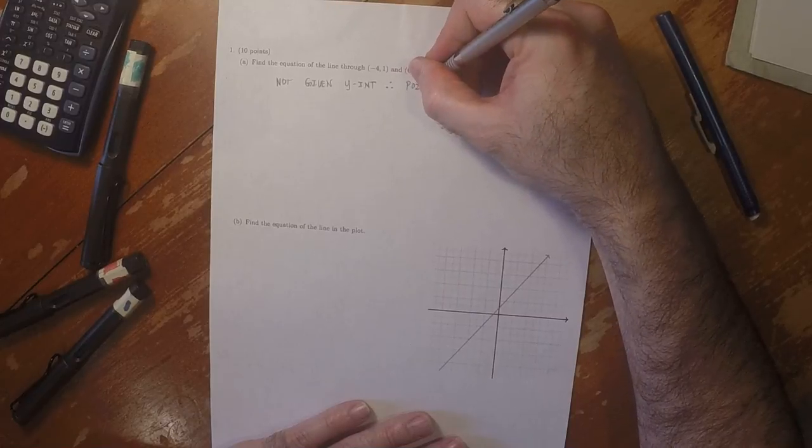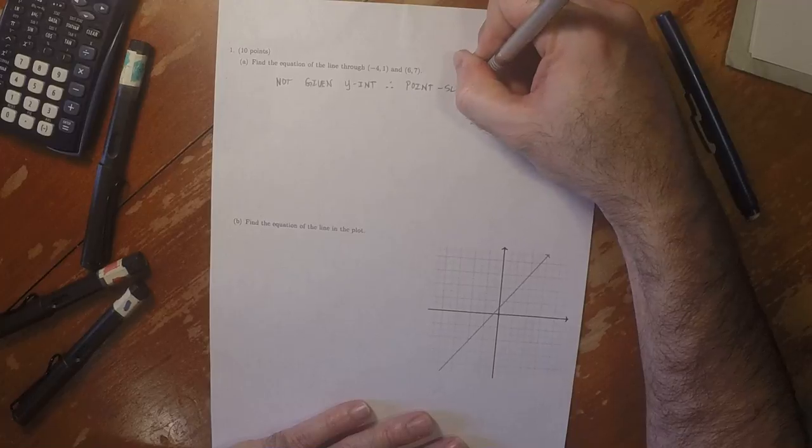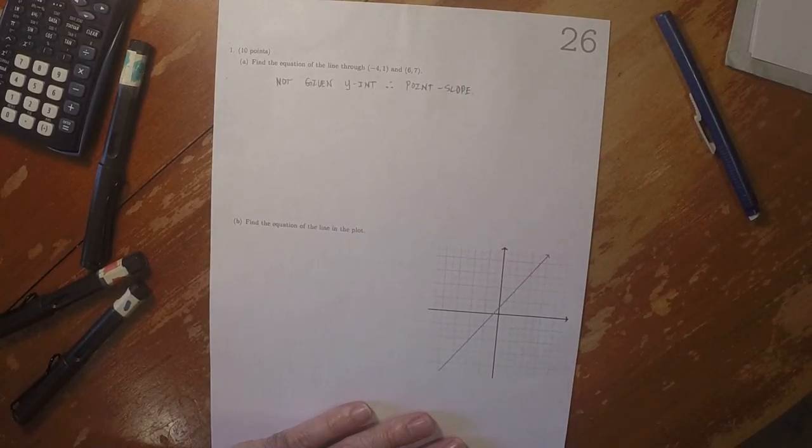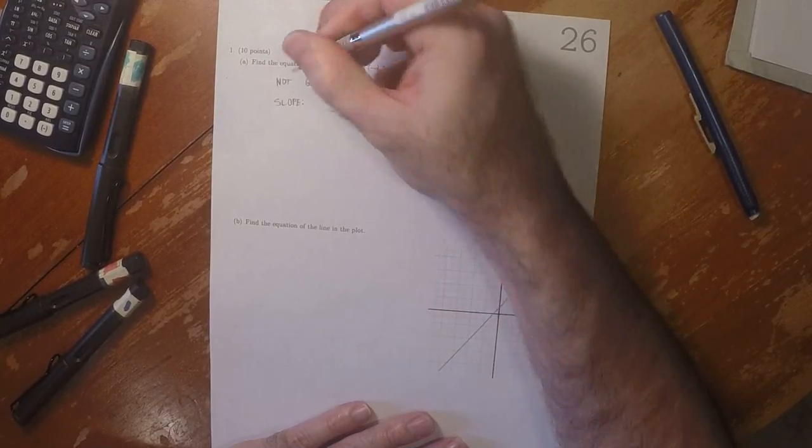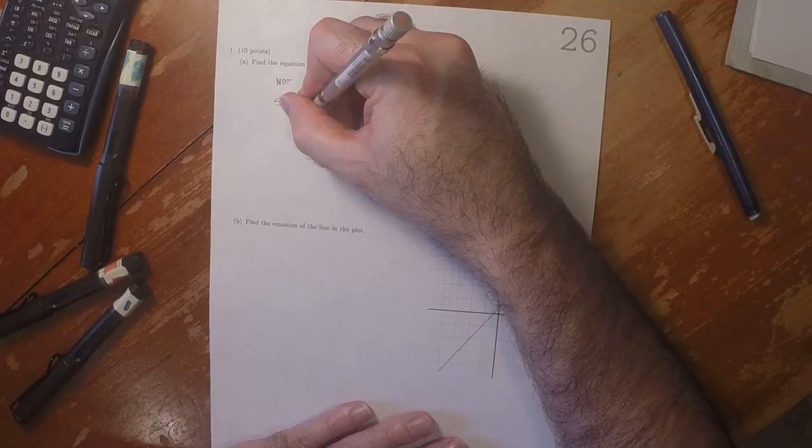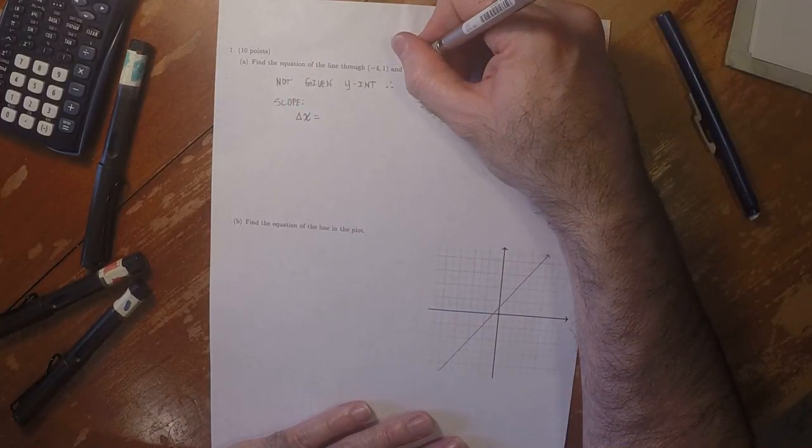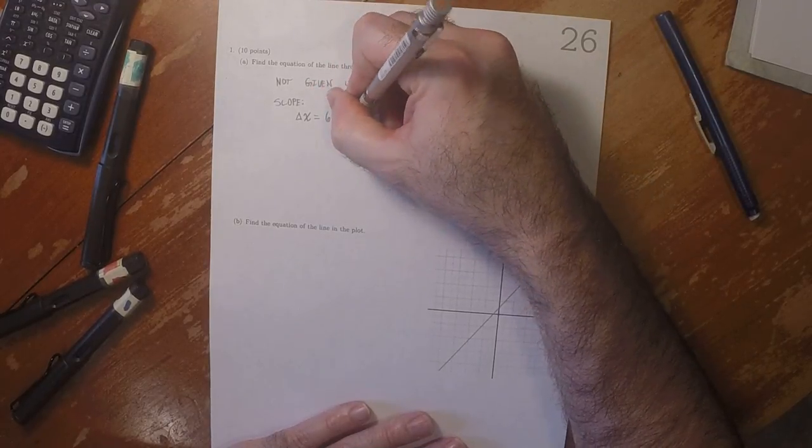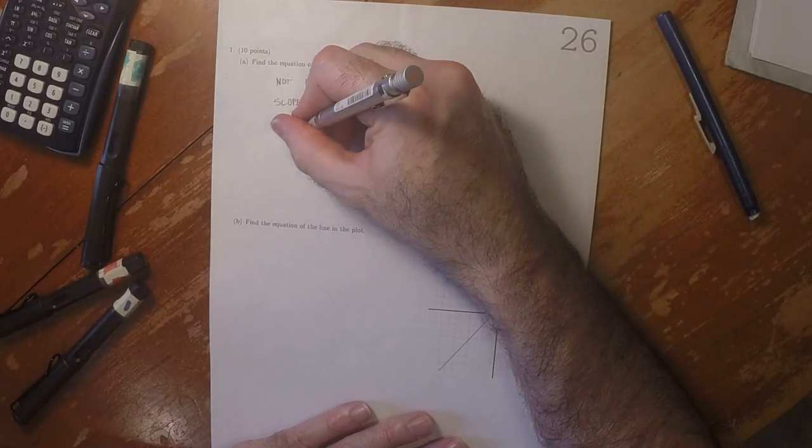using the point-slope formulation of a line, which means we need to find the slope. For the slope, the change in x is 6 minus negative 4, which is 10, and